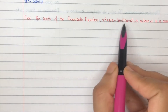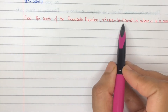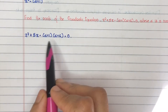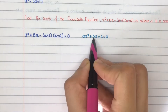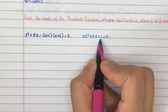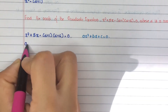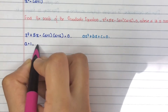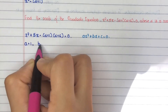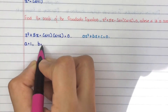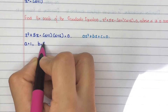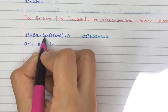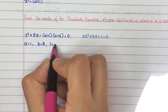First step: consider the given quadratic equation and compare it with the general equation to find the values of a, b, and c. Here, a equals the coefficient of x squared which is 1, b equals the coefficient of x which is 5, and c equals the constant term: minus (alpha plus 1)(alpha plus 6).